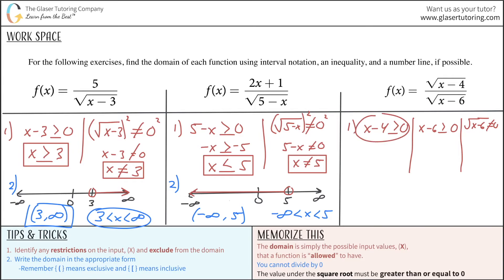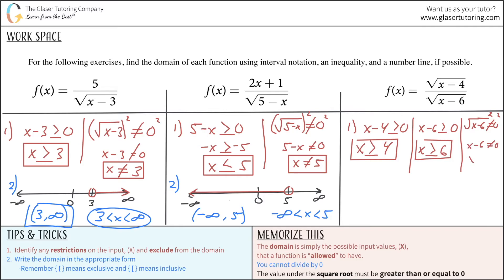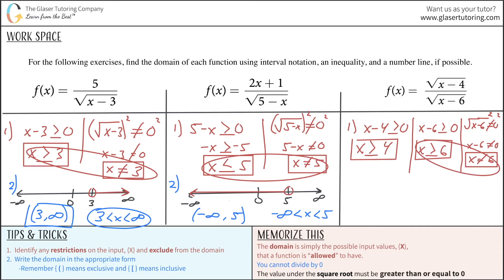Solving each restriction: add four — x must be greater than or equal to four. Doing the same for the second: x must be greater than or equal to six. Then squaring both sides on the third: x minus six cannot equal zero, so x cannot equal positive six. Notice you should be noticing a pattern here with some of these values — I'm not going to state it, I want you to think about what the pattern is.